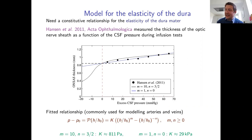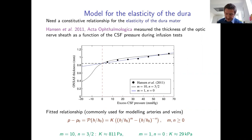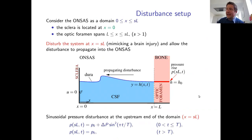A nonlinear law commonly used for modeling veins was also used, with m=10 and n=3/2. This gives a much lower stiffness of about 800 Pa. Both the linear and nonlinear fittings are used in the results. The model is then set up by applying a pressure perturbation at the optic foramen end of the domain and observing what happens in the ONSAS.